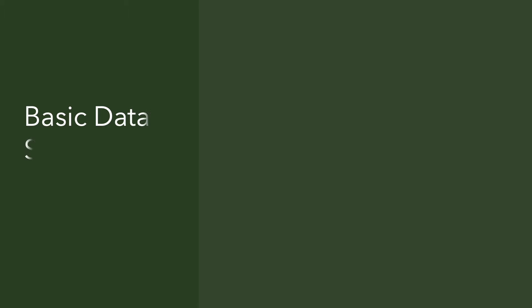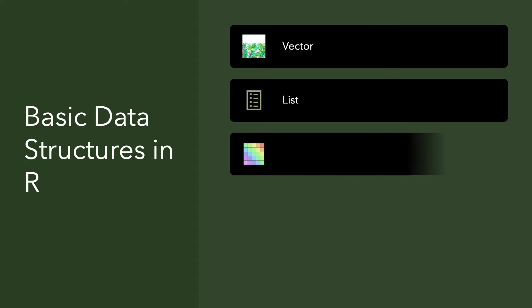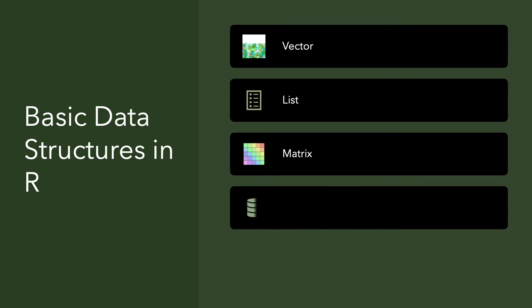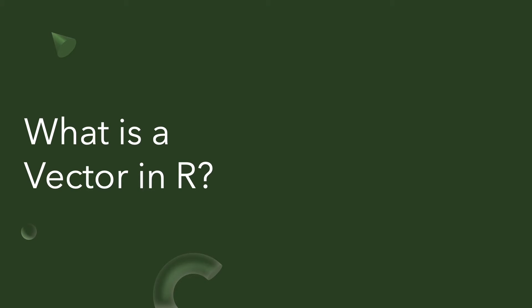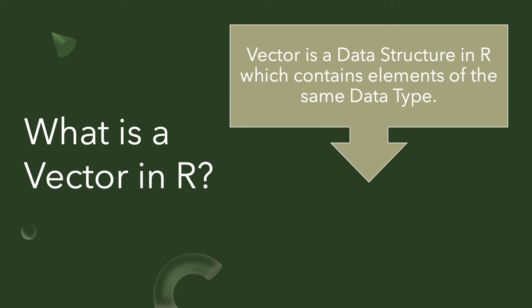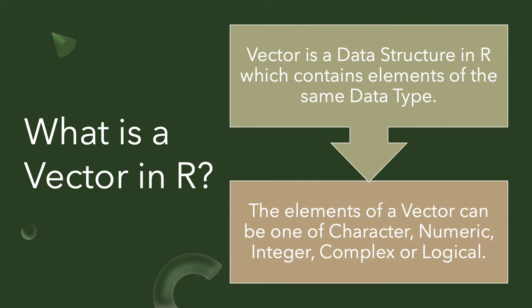Now we are at the point of our discussion — vectors. A vector is a basic data structure in R. Other data structures in R include lists, matrix, data frames, and factors. We will discuss data frames in much more detail during the course. Vectors are data structures in R which contain elements of the same data type. Vectors differ from lists because vectors can contain only one data type, whereas lists can contain multiple data types.